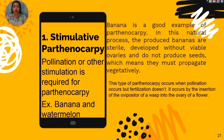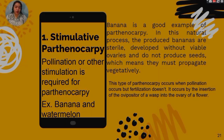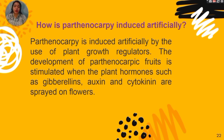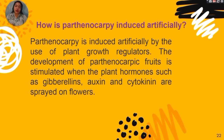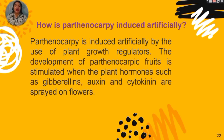It also occurs by the insertion of the ovipositor of a wasp into the ovary of a flower. Parthenocarpy can also be induced artificially by the use of plant growth regulators — the five major plant hormones: cytokinin, auxin, abscisic acid, ethylene, and gibberellins. The development of parthenocarpic fruits is stimulated when plant hormones such as gibberellins, auxins, and cytokinin are sprayed on the flowers. An example is grapes, in which this helps produce seedless fruit.